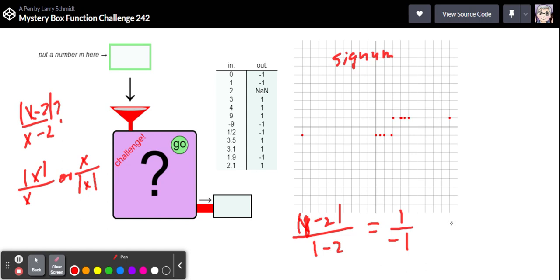If you put in a zero, zero minus two is negative two, take the absolute value you get two. On the bottom zero minus two is negative two, you're still going to get that negative one. So that looks right.